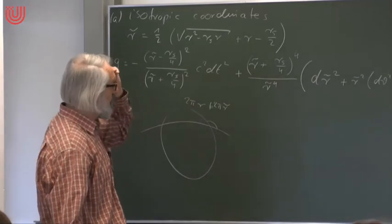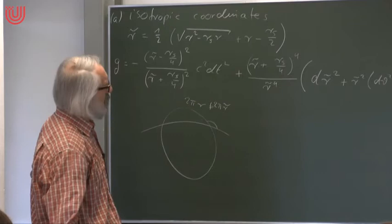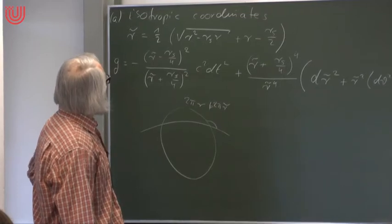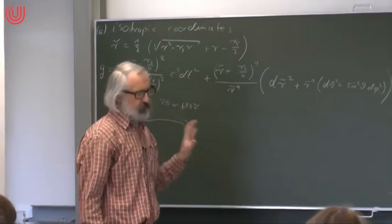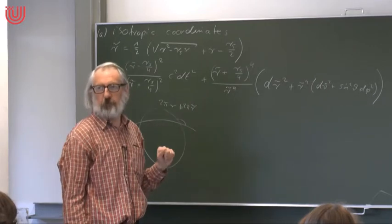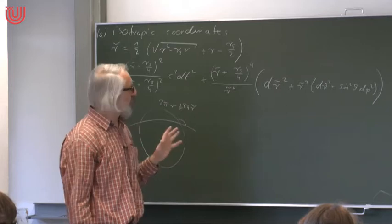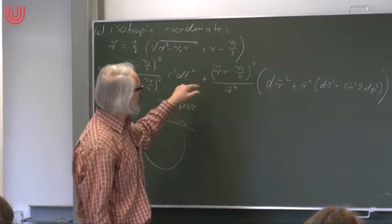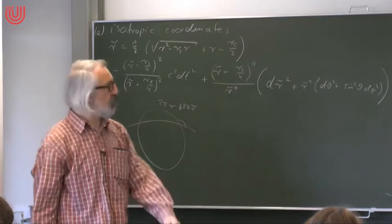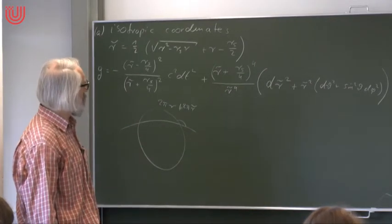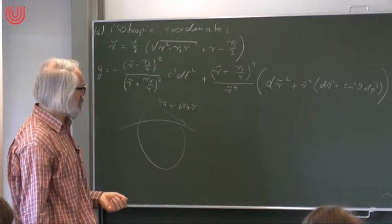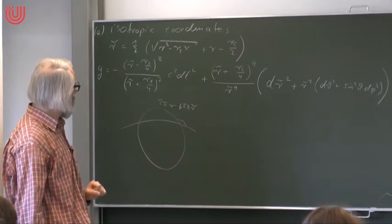Isotropic coordinates are very useful in many respects — for instance in gravitational lensing in Schwarzschild spacetime. You can introduce isotropic coordinates for any spherically symmetric and static spacetime. For Reissner-Nordström, Taub-NUT, or similar spacetimes, you can always introduce coordinates where the spatial part is just a conformal factor times a flat metric. For an arbitrary spacetime this is generally not possible, but for spherically symmetric and static ones it always works.